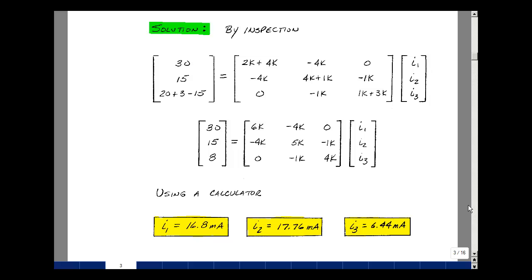We could use Kramer's rule to solve for the currents I1, I2, and I3. Or if you have this feature in your calculator, we could just plug this in and see what the values are. I did that and found that it was 16.8 milliamps, 17.76 milliamps, and 6.44 milliamps. Or perhaps you want to try Kramer's rule and see if you get these same answers.